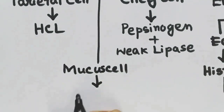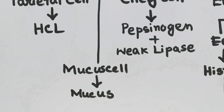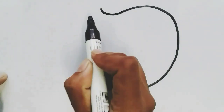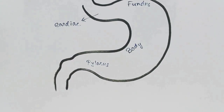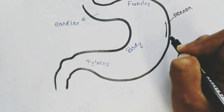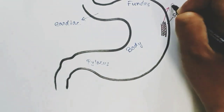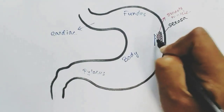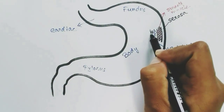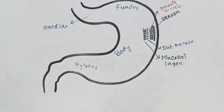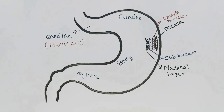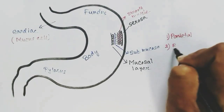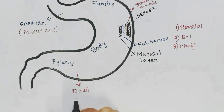Looking at the stomach again: the cardiac region, fundus, body, and pylorus region. The stomach wall layers are the serosa layer, the three smooth muscle layers, the submucosal layer with blood supply, and the mucosal layer containing the gastric glands. In the cardiac region, mucus cells are more predominant in the gastric glands. In the body and fundus, gastric glands mainly have parietal cells, ECL cells, and chief cells. In the pylorus region, gastric glands mainly have D cells and G cells.